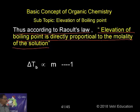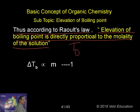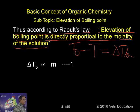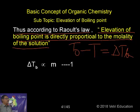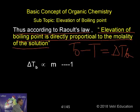Elevation of boiling point means: when we have a solvent with boiling point T₀, and we have a solution with boiling point T, the difference ΔTb represents the elevation. Whenever you take a solvent and add any solute, the boiling point of the solution will be elevated. According to Raoult's law, ΔTb is proportional to the molality of the solution.